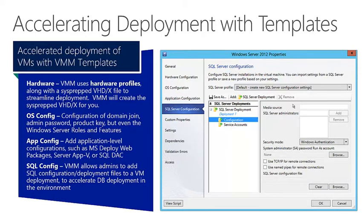The next layer is the operating system config. VMM allows configuration of domain join, admin password, product key, and even the Windows Server roles and features. This configuration can be saved as a guest OS profile, and again, used outside of the template process or across multiple templates.